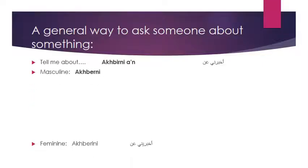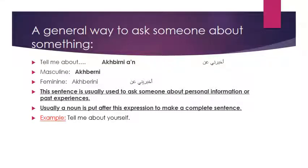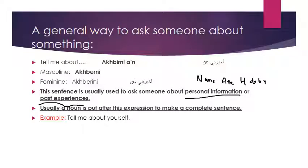Now, if you want to ask someone about something — any issue — we use this sentence to ask about personal information. Personal information may include name, nationality, age, hobby, occupation, or past experiences. The way to ask is 'Tell me about.' 'Tell me' is أخبرني, and 'about' is عن. So we have a new preposition here — عن — and we will identify prepositions later.